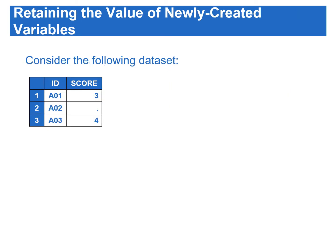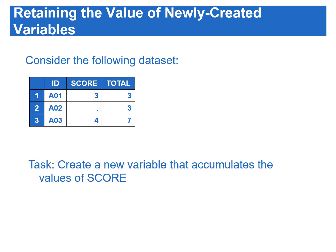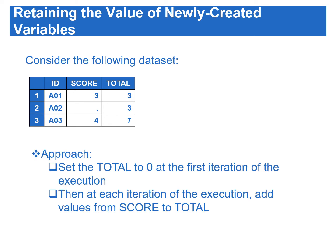Now let's see an example based on this data set. In this data, there are two variables: ID and score. Suppose we would like to create a new variable, total, that is used to accumulate the score variable. To create an accumulator variable total, we need to initialize total to zero at the first iteration of the execution, then at each successive iteration, add the value from the score variable to the total variable.